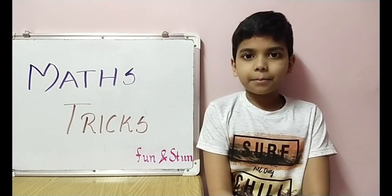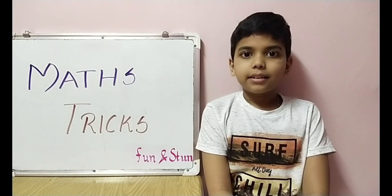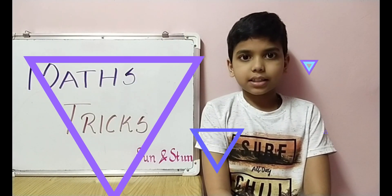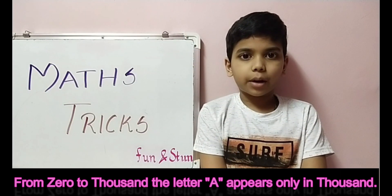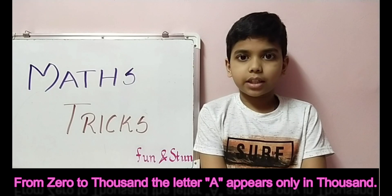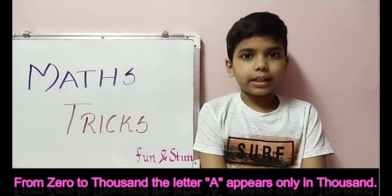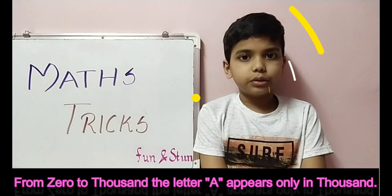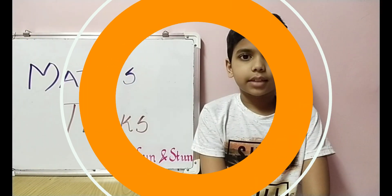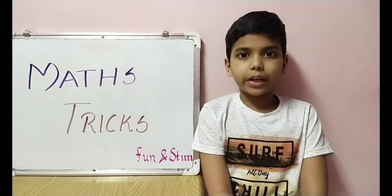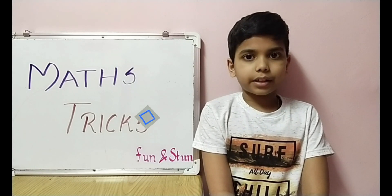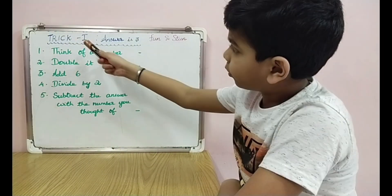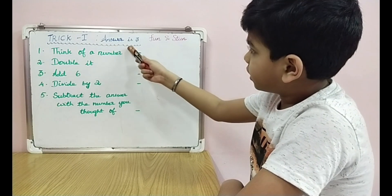Hey guys, welcome to Fun and Stunt. Let's start this video with a max fact: from 0 to 1000, the letter A appears only in 'thousand'. In this video we are going to see a few math tricks.